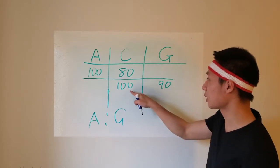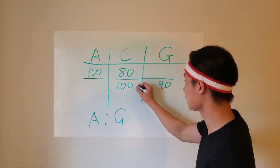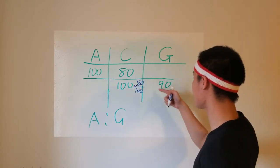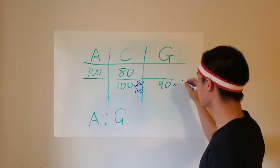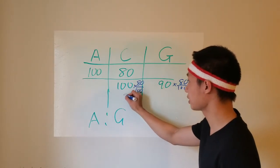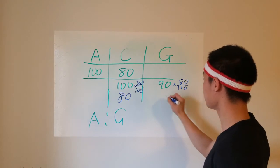So to go from 100 to 80, I can multiply this by 80 over 100. And of course, I have to do the same thing to the other side, which is 90 times 80 over 100. And if you do the calculation, this becomes 80, and this will become 72.